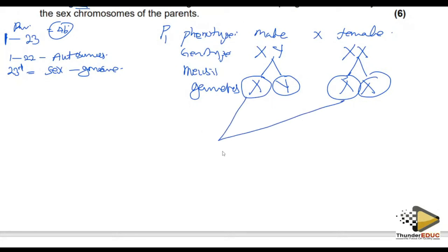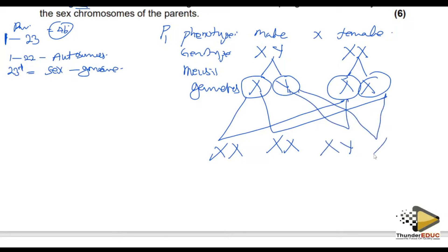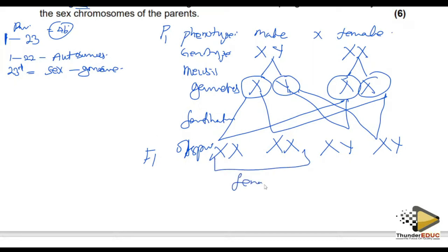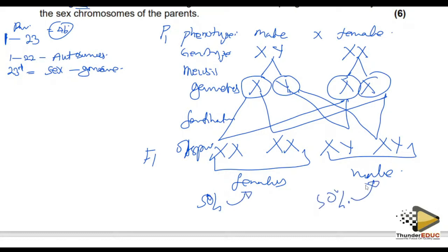Fertilization occurs: X from the mother with X from the father gives XX; X from the mother with Y from the father gives XY. So the offspring are XX (females) and XY (males). This means you have a 50% chance of producing females and a 50% chance of producing males.